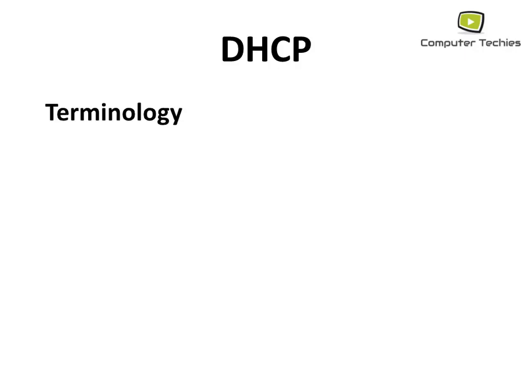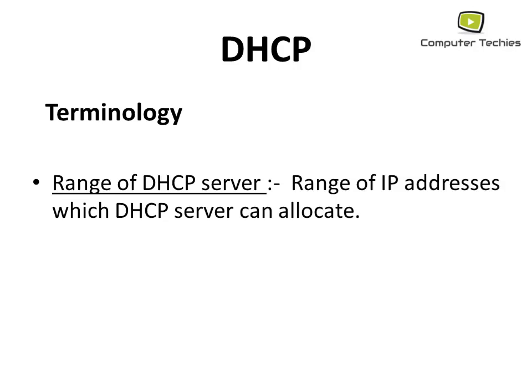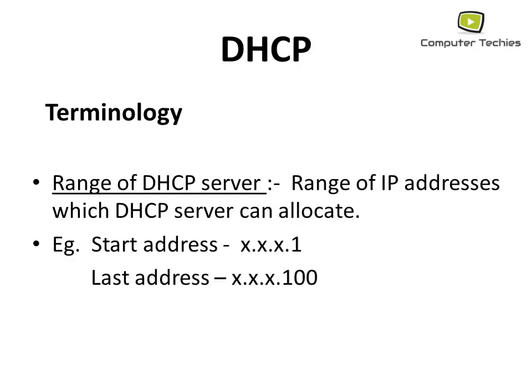Before starting with DHCP, one must understand some terminologies. The first is the range of a DHCP server — the range of IP addresses which the DHCP server can allocate. For example, consider a DHCP server with starting address x.x.x.1 and last address x.x.x.100. This range from x.x.x.1 to x.x.x.100 means the DHCP server can allocate IP addresses to 100 different hosts.